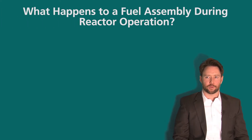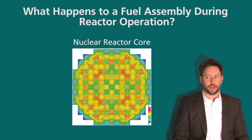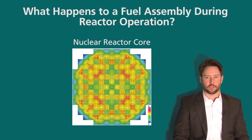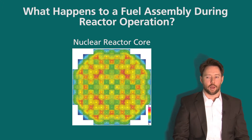What happens to a fuel assembly during reactor operation? We have in front of us a grid layout of a nuclear reactor core. To begin reactor operation, fuel assemblies are loaded at each square position within the core and then the reactor is started. On this map, as the reactor is operated, you will notice different colors from blue to red. Red indicates more power and more neutrons being generated, whereas blue indicates less power and fewer neutrons being created.